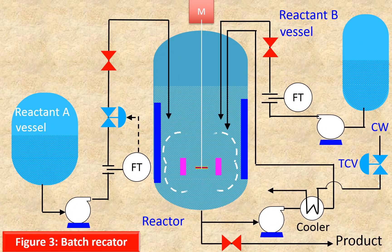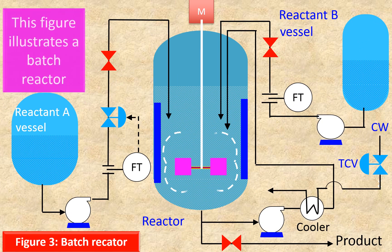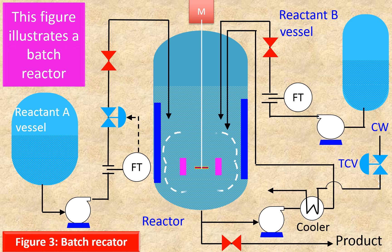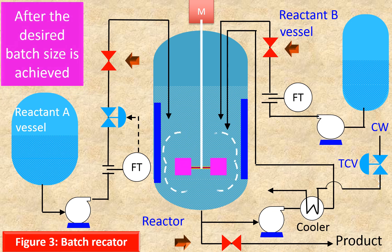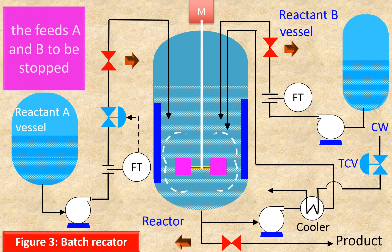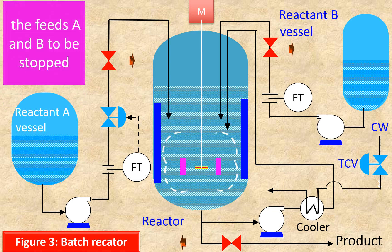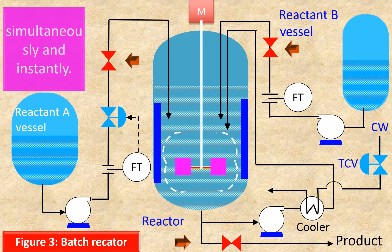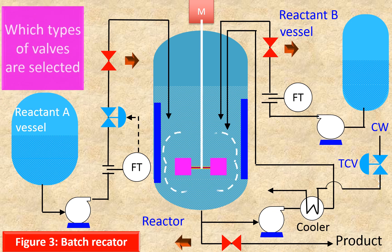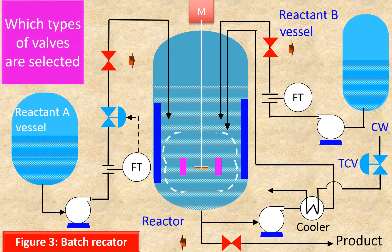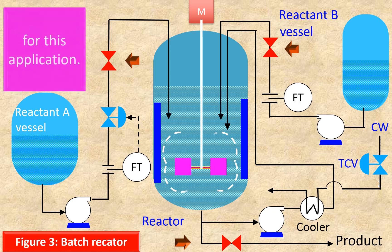This figure illustrates a batch reactor. After the desired batch size is achieved, the feeds A and B are to be stopped simultaneously and instantly. Which type of valves are selected for this application?